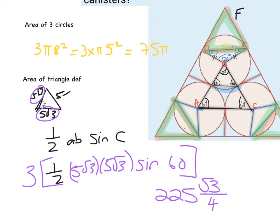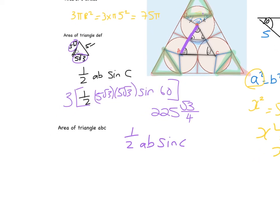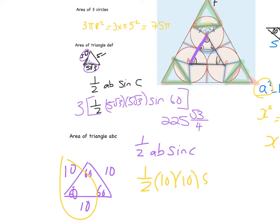The next area to find is the large equilateral triangle ABC. It has two radiuses as sides, so I'm dealing with a triangle that is 60°, 60°, 60° with sides of 10, 10, and 10. Using half ab sin C: ½ × 10 × 10 × sin(60°) = 25√3. There is only one of these triangles.